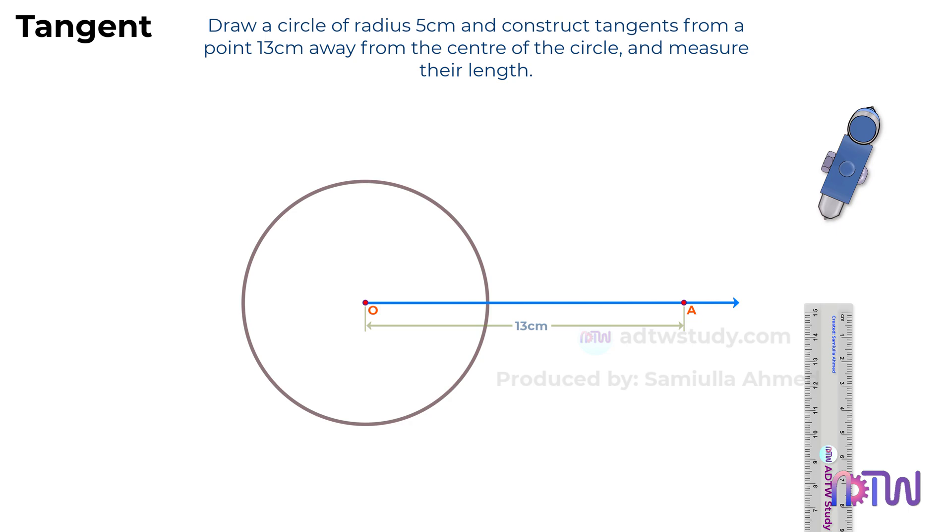From this point A, we will draw the tangents to the circle. Remember, whenever there is a point lying outside a circle, only two tangents can be drawn to the circle. It is not possible to draw more than two tangents to a circle from this external point.